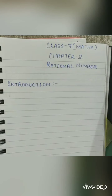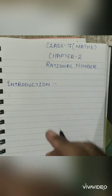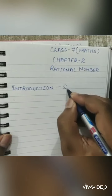Let's start with chapter number two: Rational Numbers. I hope you all have understood what an integer is, which I have already taught in my previous session, and you must have completed your work. In this introduction, I will give you a short review about what is an integer.